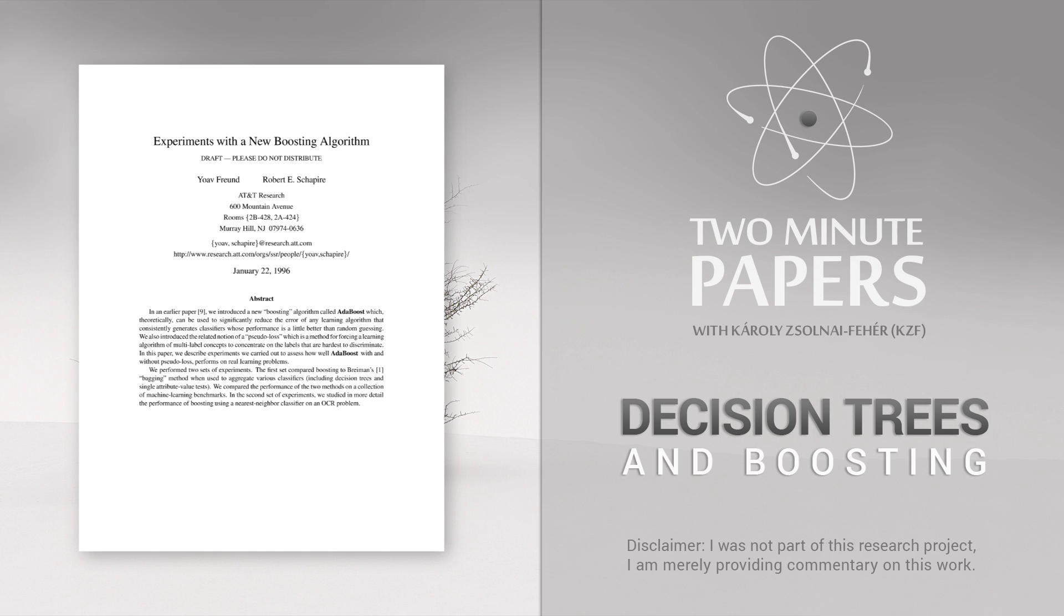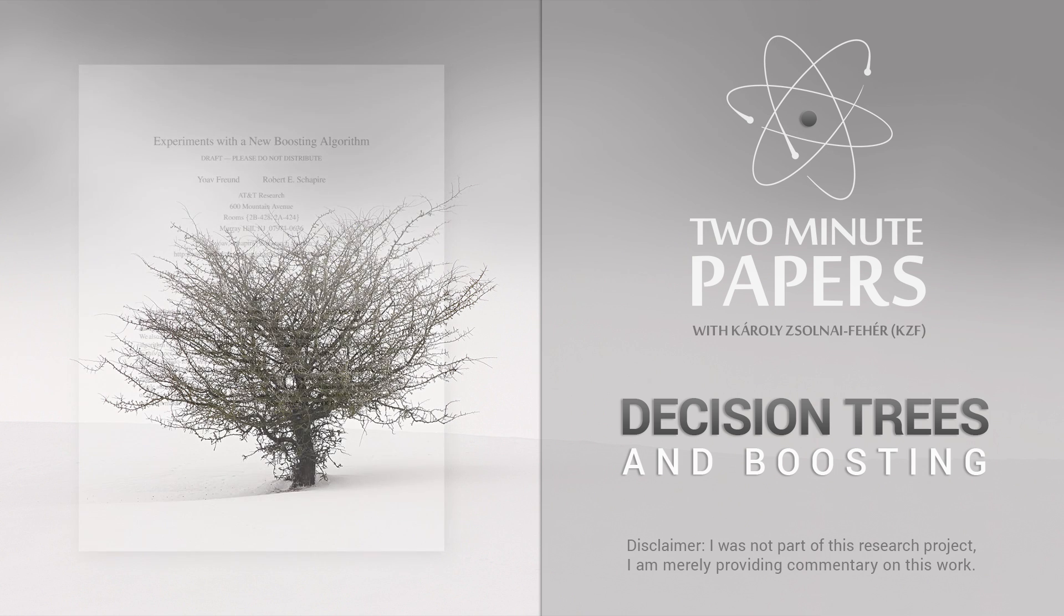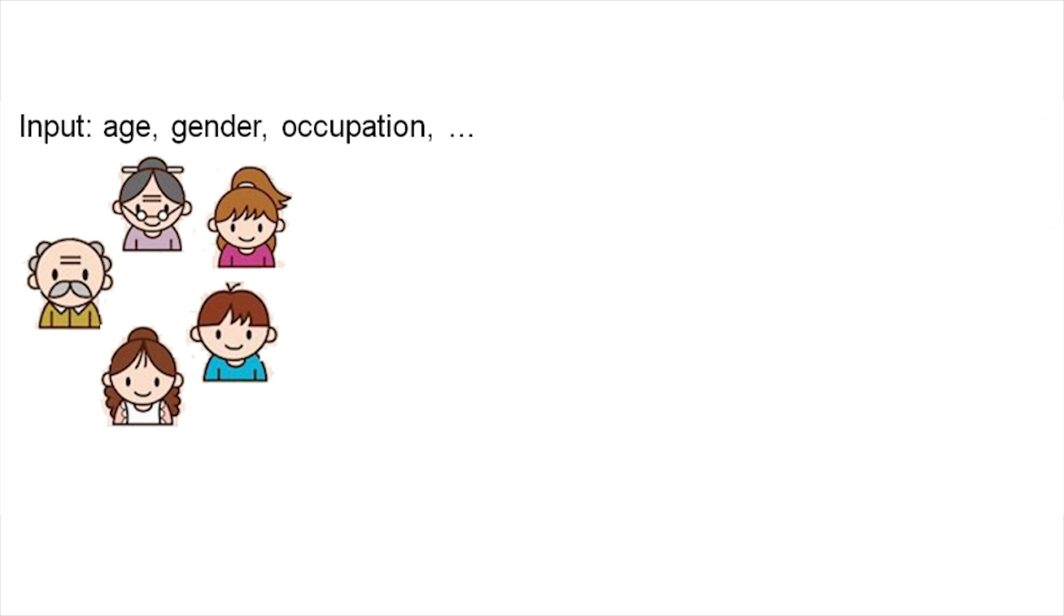A decision tree is a great tool to help make good decisions from a huge bunch of data. The classical example is when we have a bunch of information about people and would like to find out whether they like computer games or not.